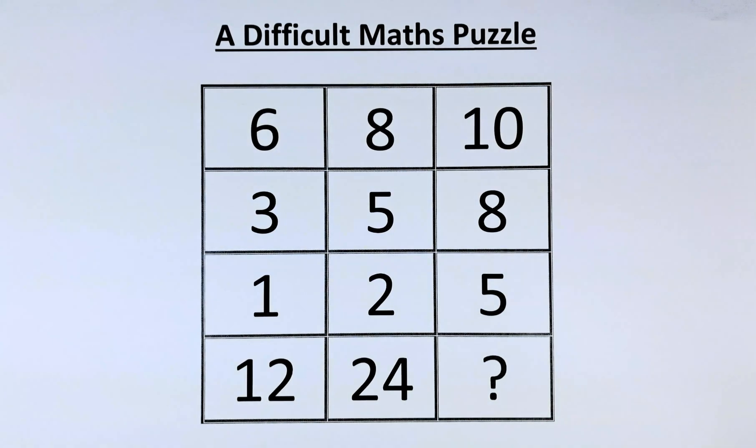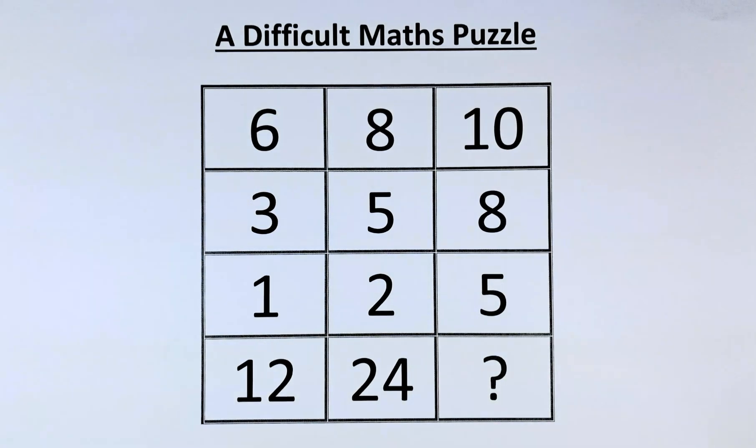Welcome back to this rather difficult math puzzle. The numbers in the puzzle are 6, 8, 10 in the first row, 3, 5, 8 in the second row, 1, 2, 5 in the third row, and 12, 24, and a question mark.